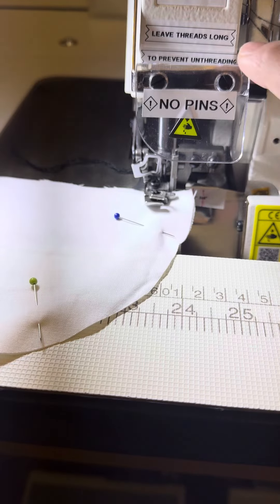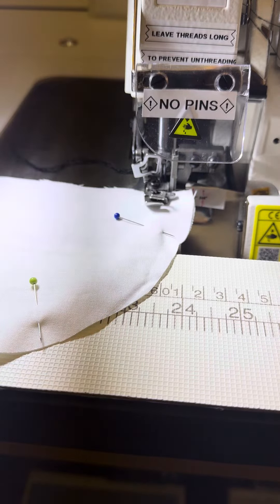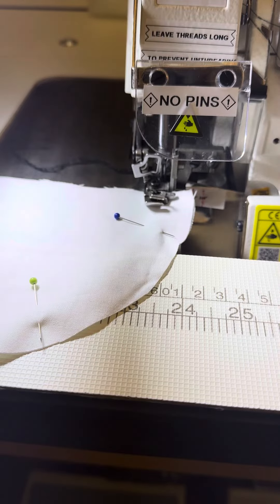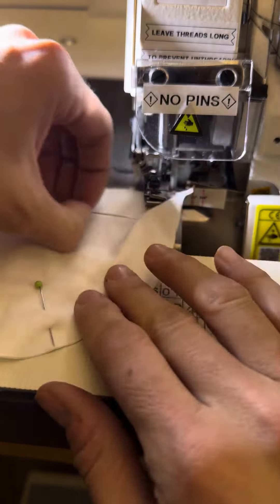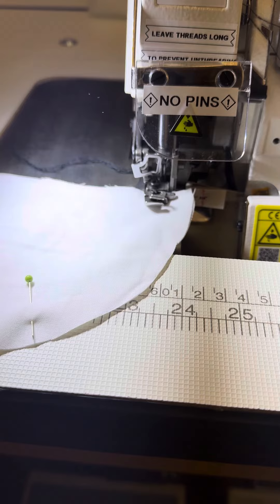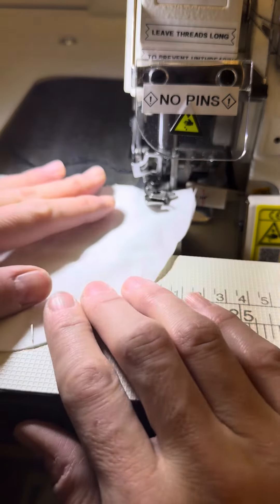Like we talked about: no pins, no hands. We don't want anything going near that knife blade, so we want to make sure we're removing the pins well before we get to them as we're sewing.